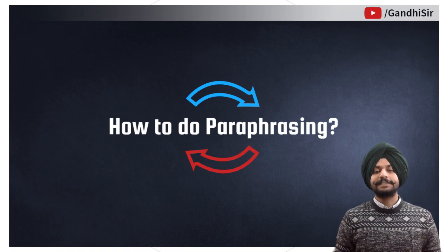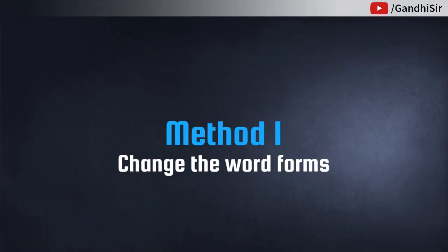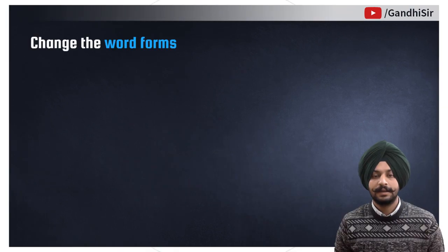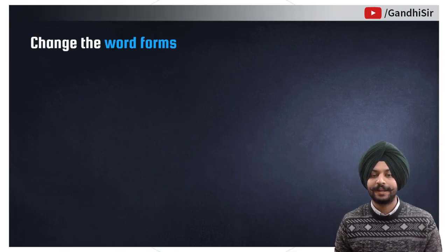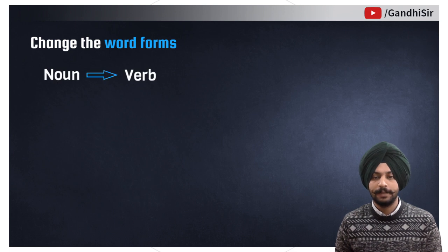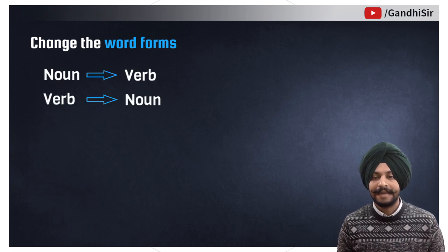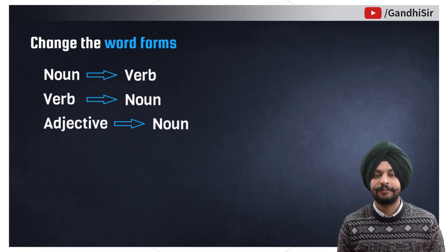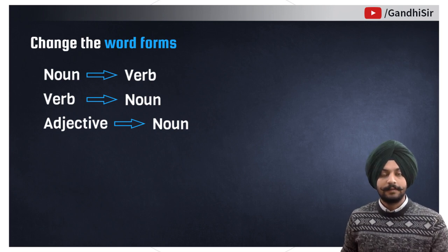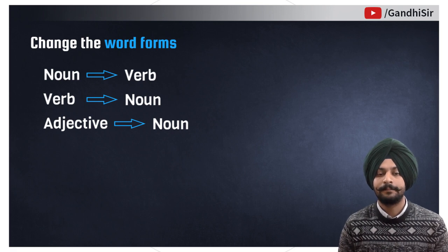Let's talk about the first method to paraphrase, which is changing the word forms. Another way to paraphrase is to change word forms — for example, changing a noun into a verb, a verb into a noun, or an adjective into a noun, or vice versa. I'll explain it to you with an example.